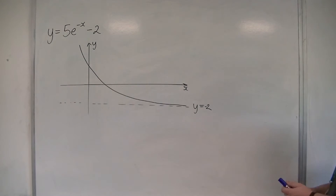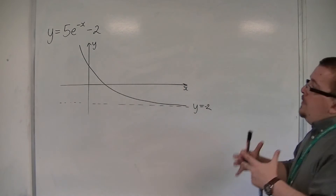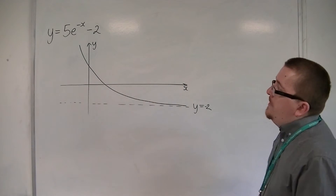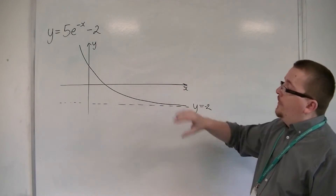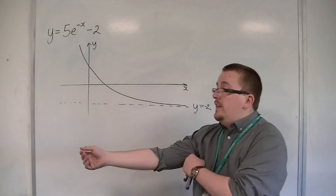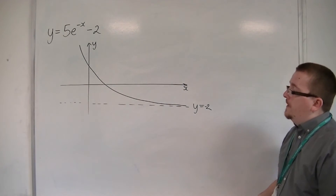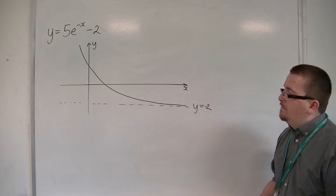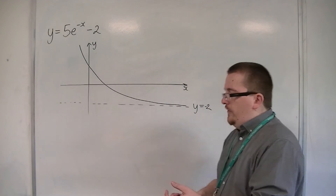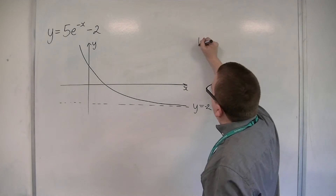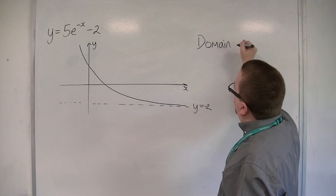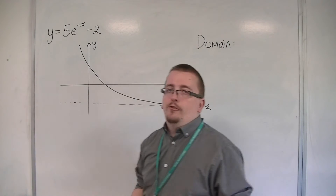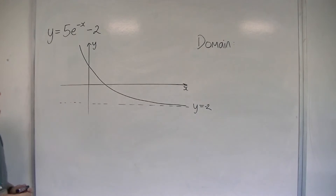If I was looking at y is equal to 5e to the minus x minus 2, for example, this is the curve that we looked at in the previous video, or one of the curves we looked at. If I wanted to talk about what values of x does this curve exist for, then what I could think about is, well, I've drawn part of the curve here.